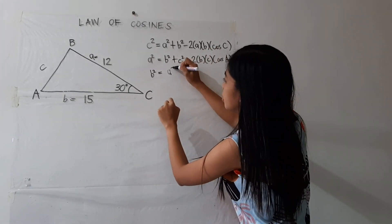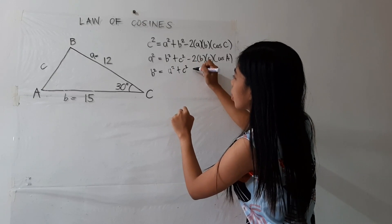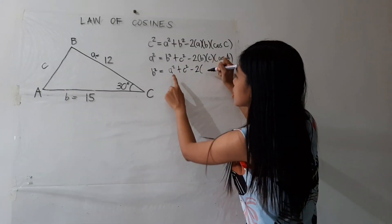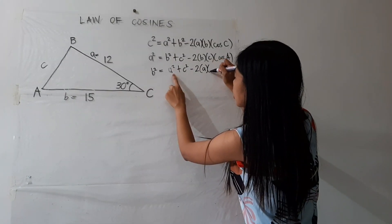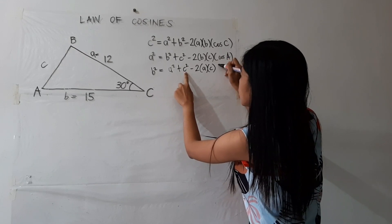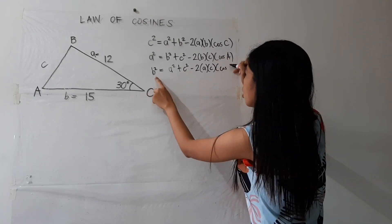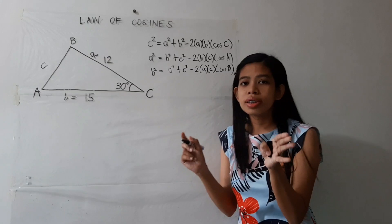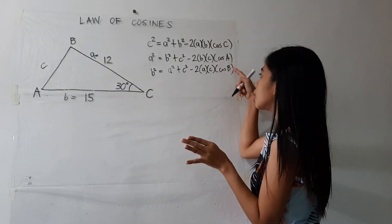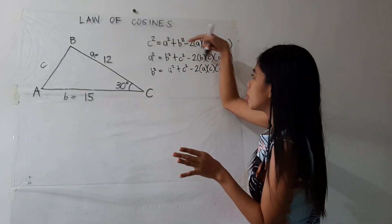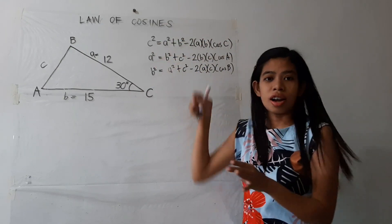If you were asked to find the measure of side B, you may use B squared equals A squared plus C squared minus 2 times A times C times cosine of angle B. Notice that the angles here correspond to the side that we are looking for.